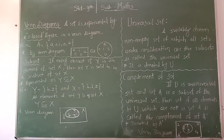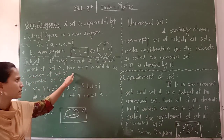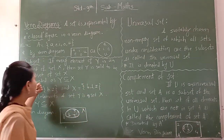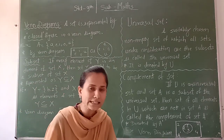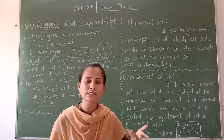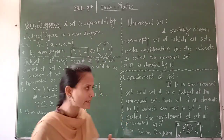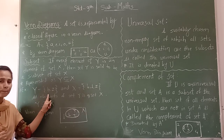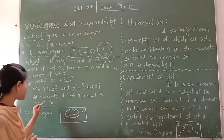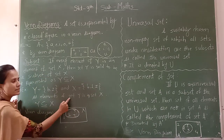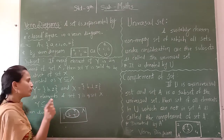Next, we will see subset. If every element of set Y is an element of set X, then set Y is said to be a subset of set X. It means if each and every element of set Y is present in set X, then set Y is called a subset of set X. For example, Y = {B, Z} and X = {B, L, Z}. You can see all the elements of set Y — B and Z — are present in set X.